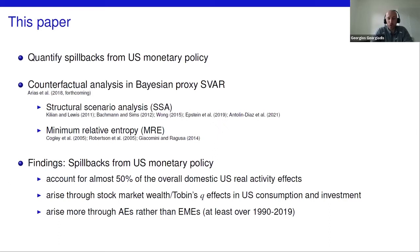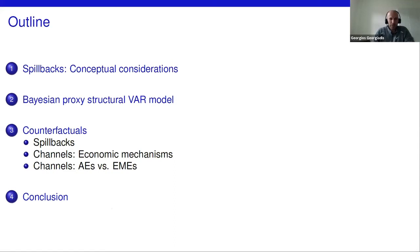Second, spillbacks do not materialize through trade as one might expect a priori; they materialize through stock market wealth effects impinging on U.S. household consumption and Tobin's q effects impinging on U.S. firm investment. Third, spillbacks materialize much more through advanced economies rather than through emerging market economies, though our results are representative of the last 30 years of data and may differ at the current juncture.